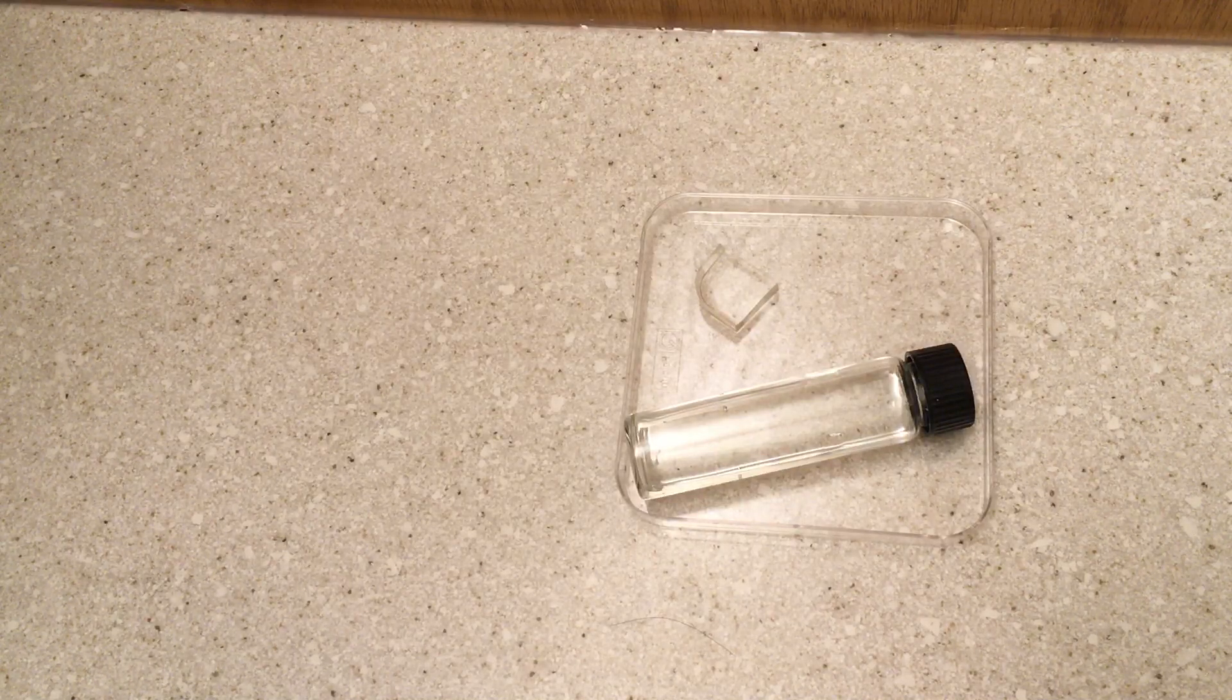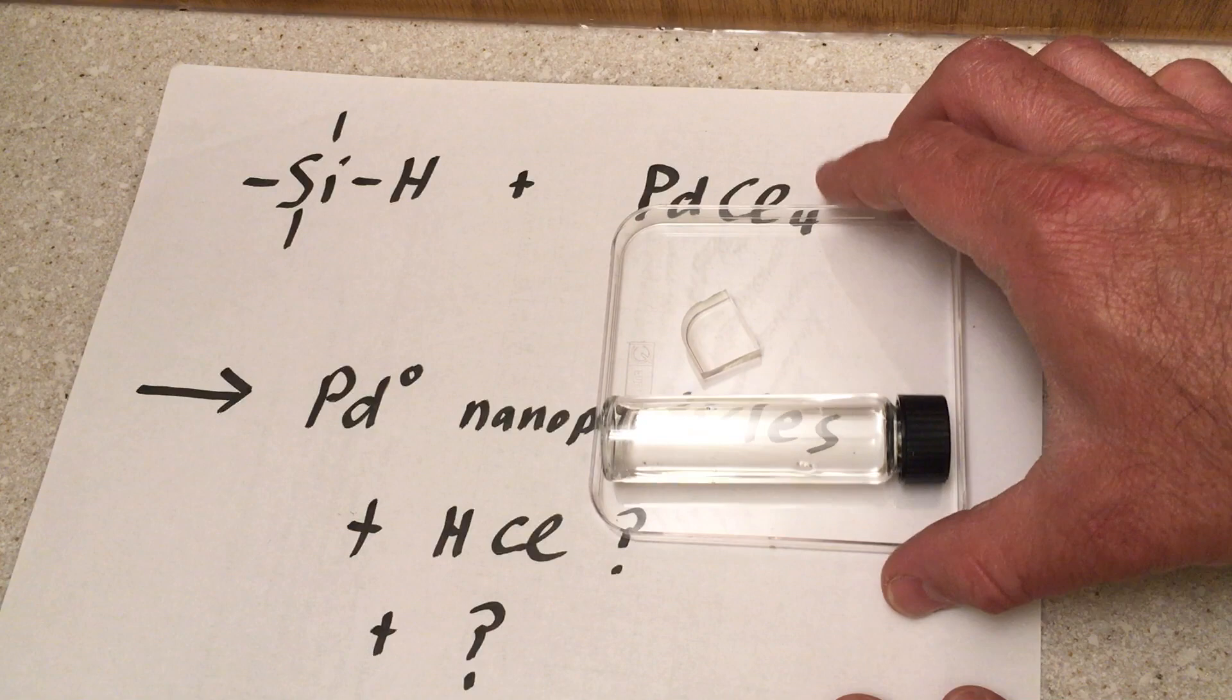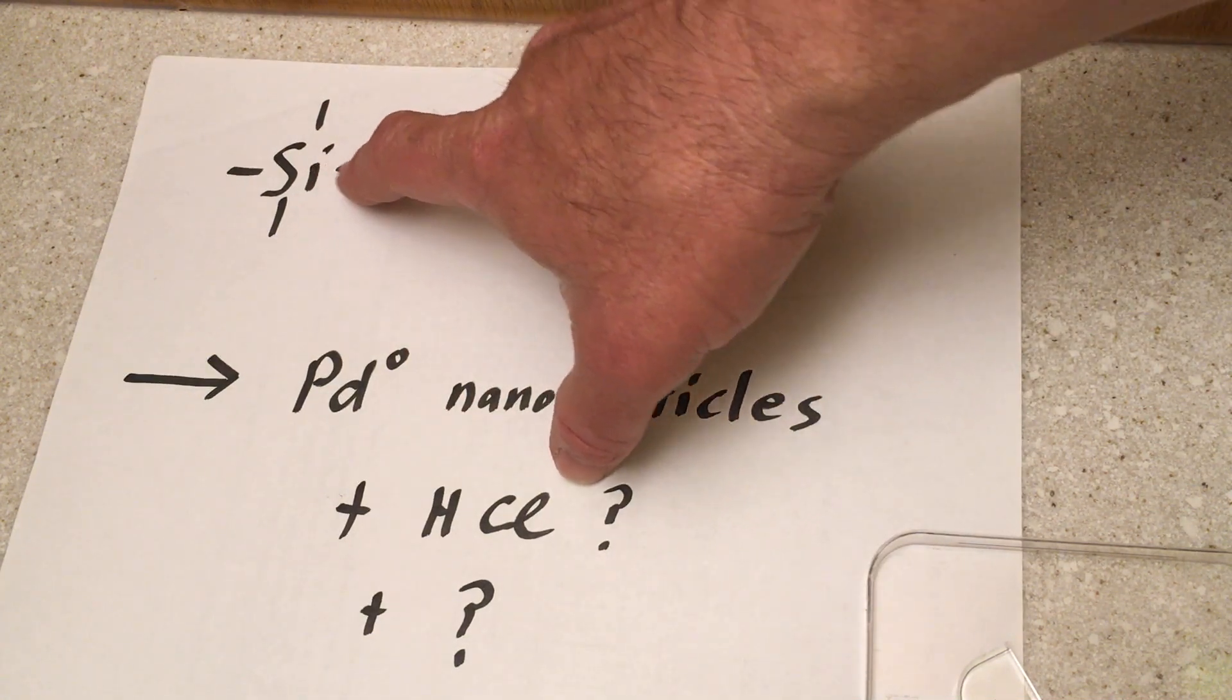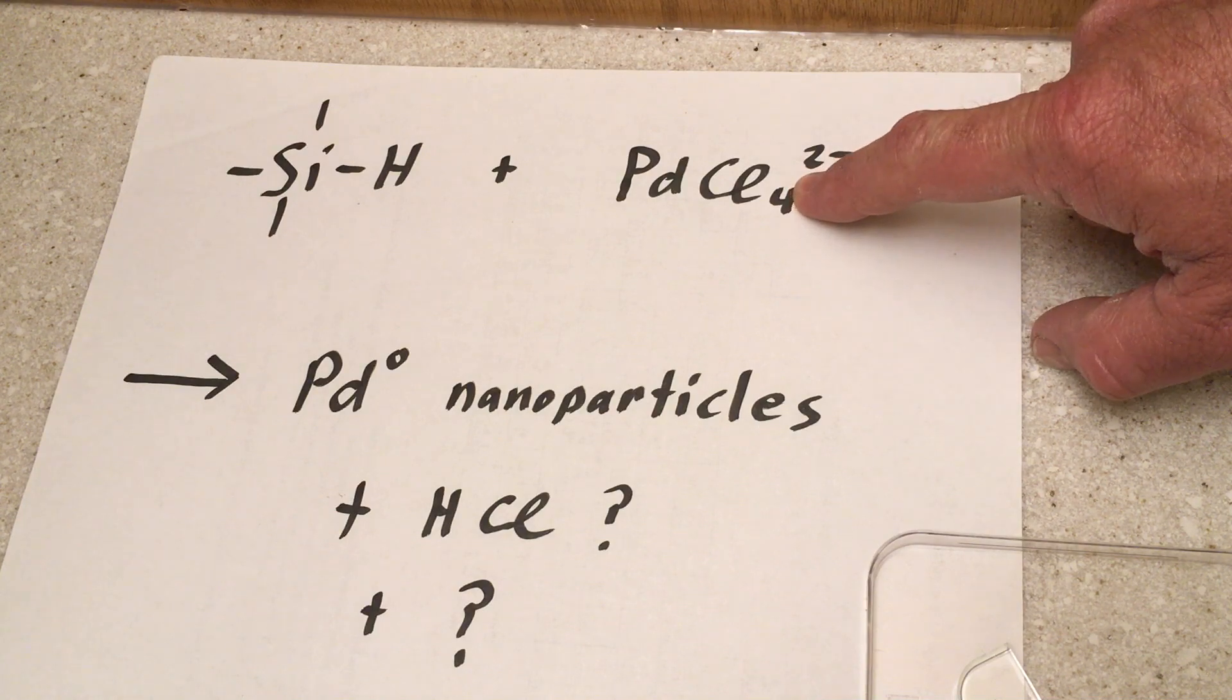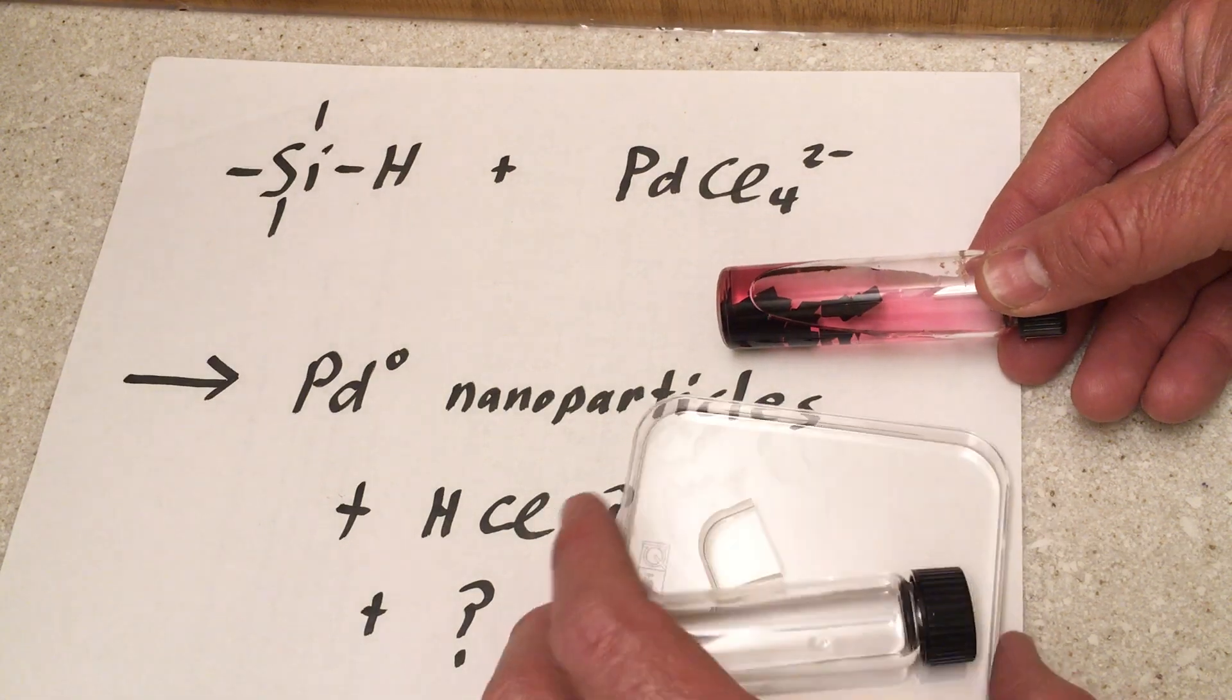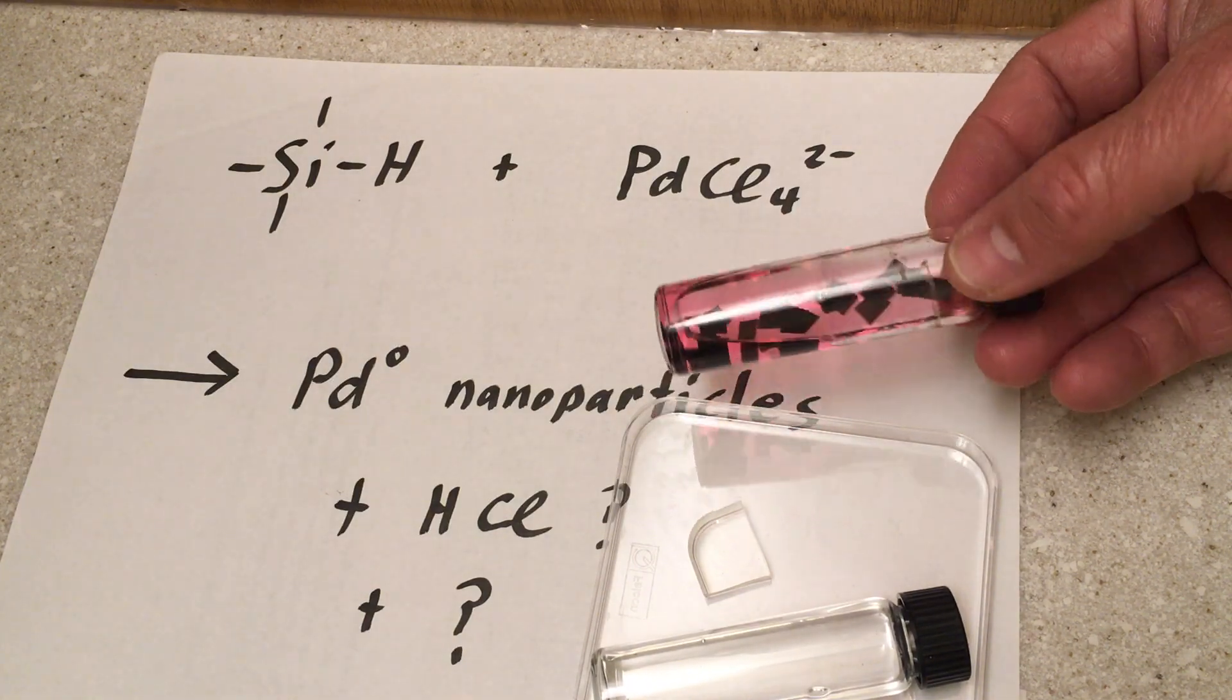But what we do is we take some of this cross-linked polymer and we add a palladium compound, tetrachloropallidate. And it turns out inside this polymer there's a few silicon-hydrogen bonds that have not broken. They're left over from the cross-linking process. And we add the palladium compound to it. It reacts to make palladium metal, which is very finely divided, as palladium nanoparticles. And it turns out palladium nanoparticles are black. And in the bottom of this vial here, we have some of this silicone with palladium nanoparticles embedded in it. And you can see that they appear to be black in this vial.